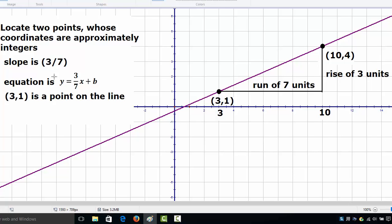the slope will be 3 over 7. And we can take the equation as y equals 3 over 7 x plus b to have it in the mx plus b form.